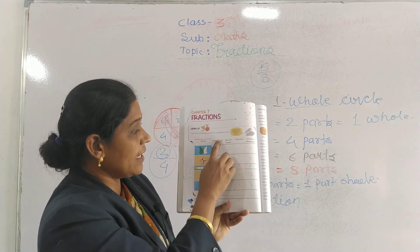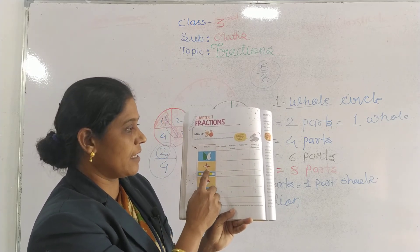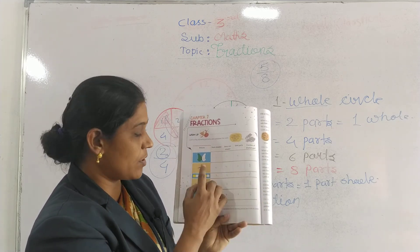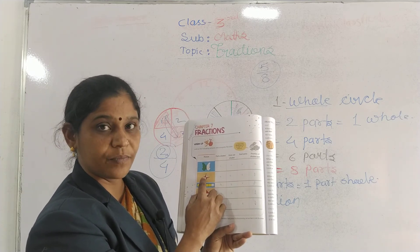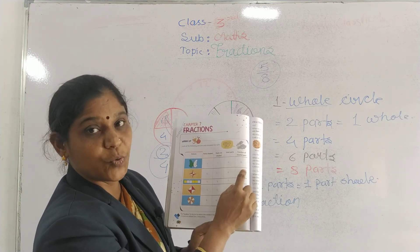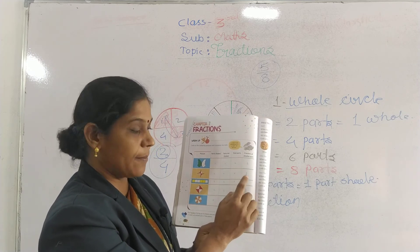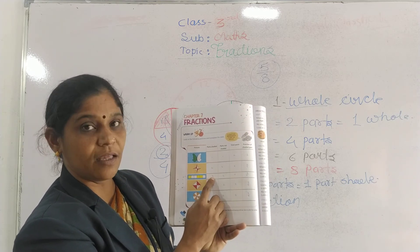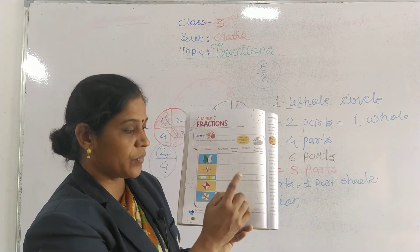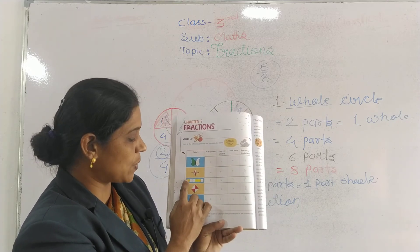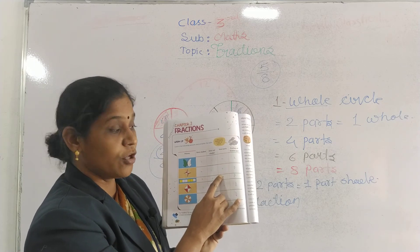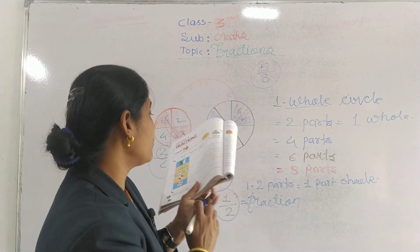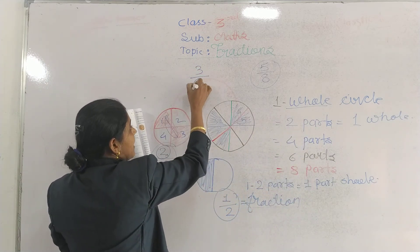अब यहाँ देखो — कितने shaded parts दिख रहे हैं? Two shaded parts। Parts not shaded? Two। Total parts? Four। तो यहाँ क्या जाएगा? Two by four। Next — three parts shaded हैं, yellow color से 3 दिये हुए हैं। Parts not shaded? Three। Total कितने? Count करो — one, two, three, four, five, six। तो three by six।